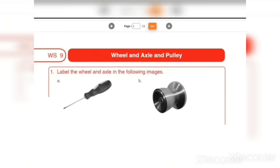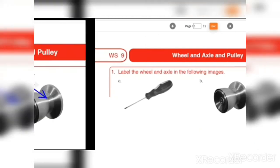Now open your worksheet number 9 in your workbook. Do question number 1 in WS9 — I am giving you 3 minutes to complete it. Now let's discuss the answer: label the wheel and axle in the following images. The axle is here and the wheel is here. In the next image — door knob — you can see the axle inside and the wheel in the picture.